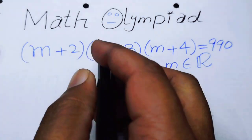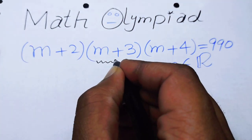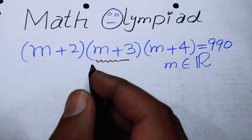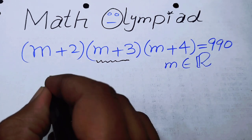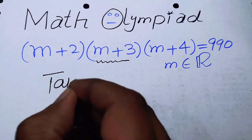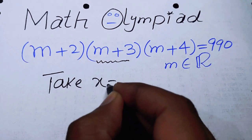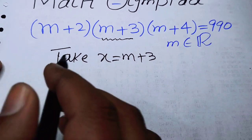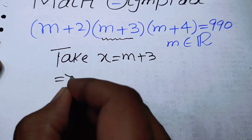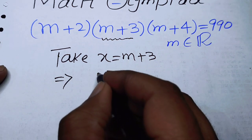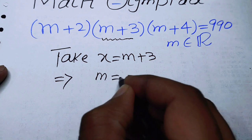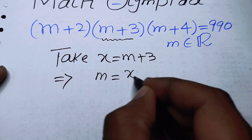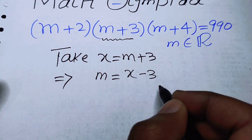We take m plus 3 equal to some variable x. So we can write x is equal to m plus 3. After that we find the value of m — taking plus 3 to the left hand side gives us m is equal to x minus 3.